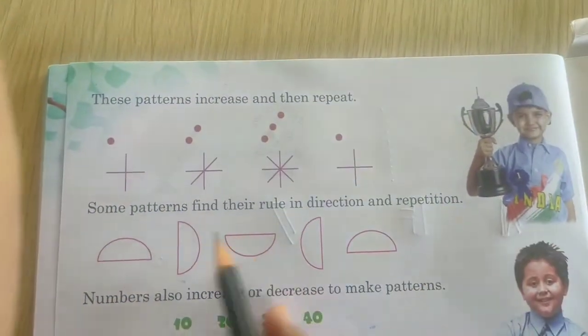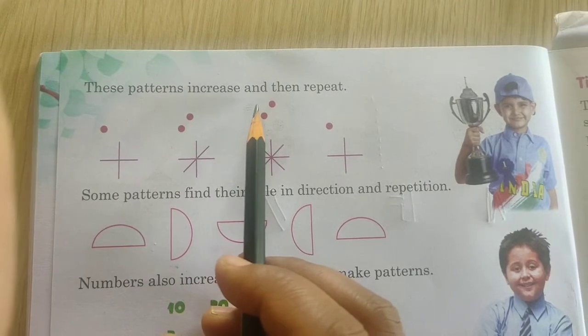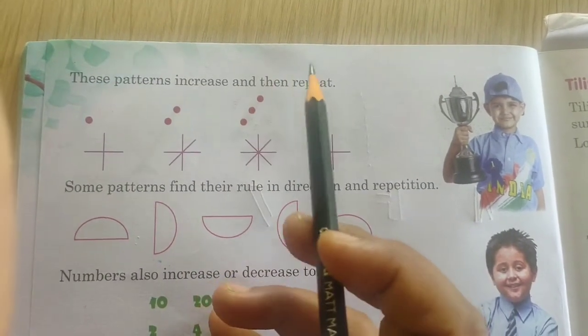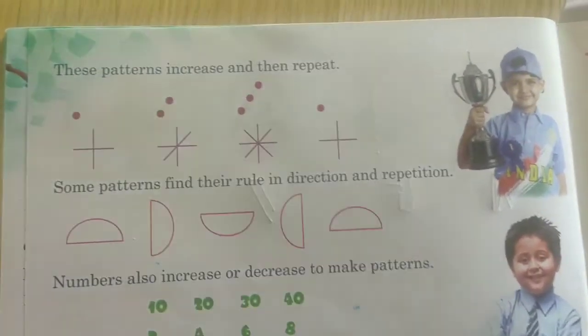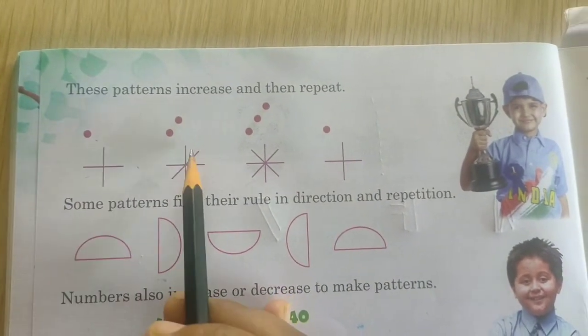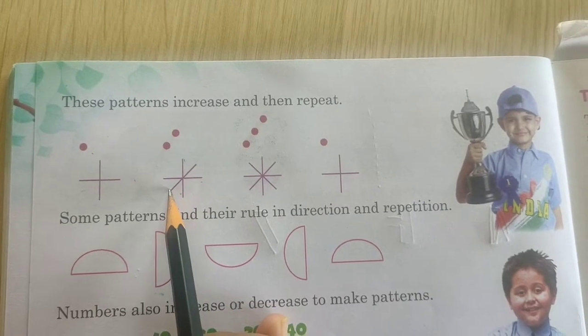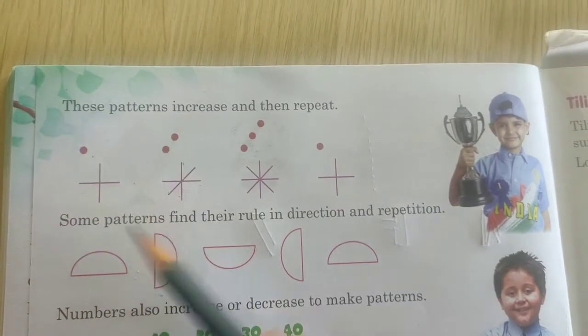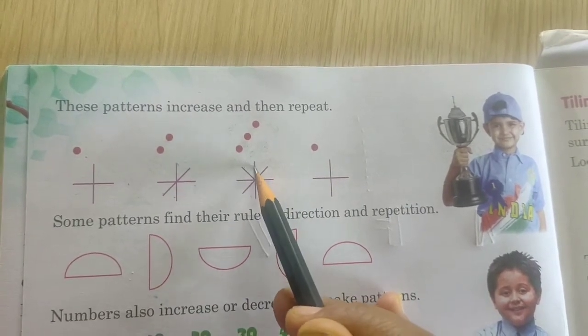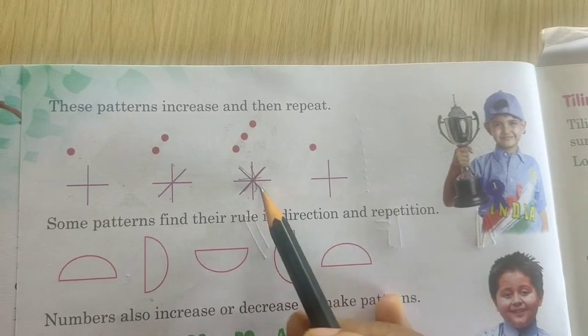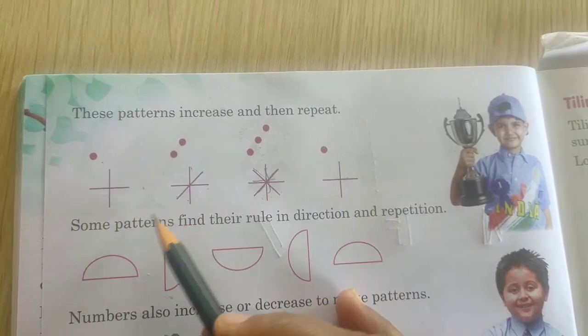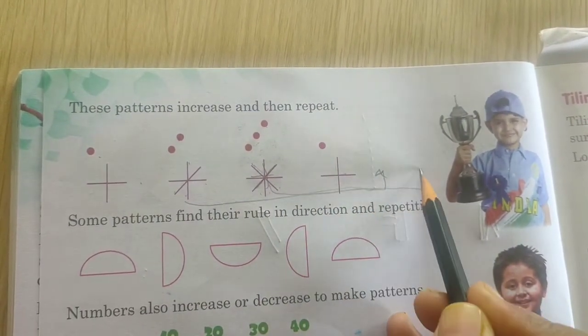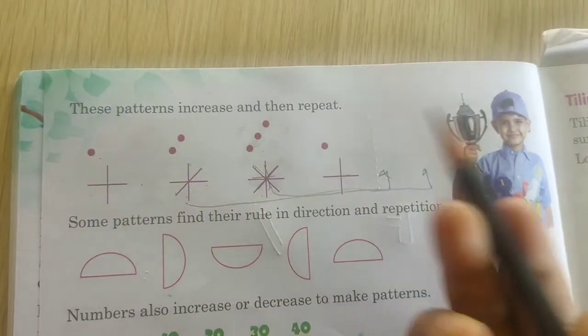And next. See now here. These pattern increase. Also it increases, then also it repeats. See now in the first picture, there is a symbol plus and one dot. The plus already is there. They have increased one line over here and one dot they have increased. So next what they are doing? Already this was there. They have increased one line and one more dot they have increased. So it is repeating.